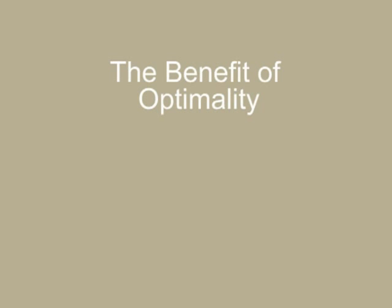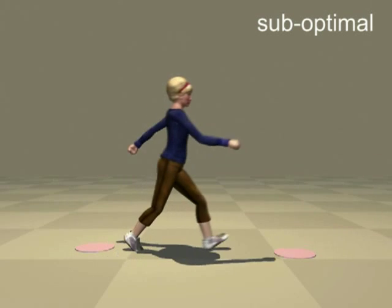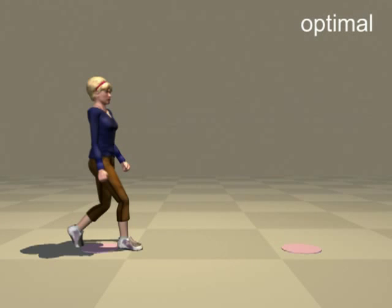The following six examples show that optimal solutions are more natural than suboptimal ones. In this experiment, the character needs to walk from one circle to another. The optimal solution is more natural.